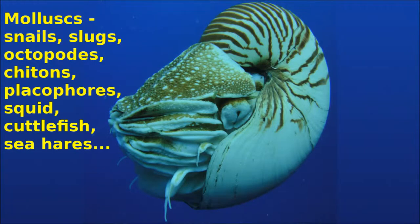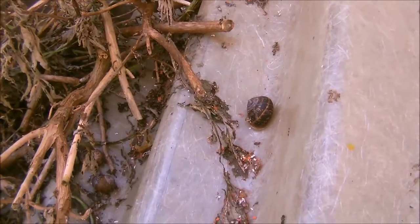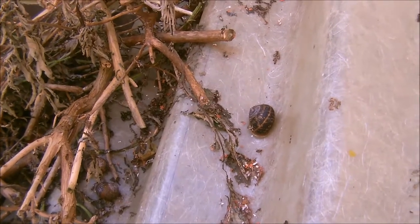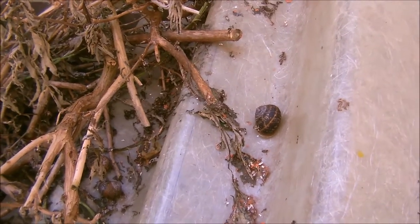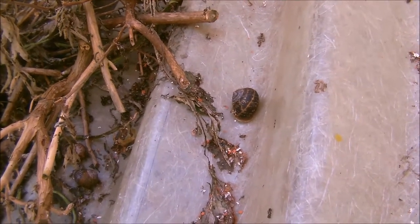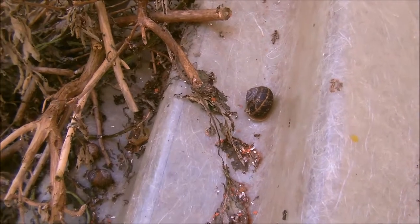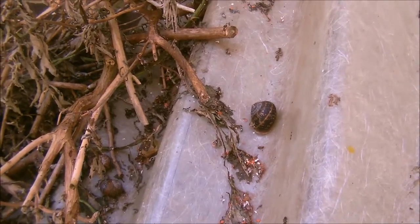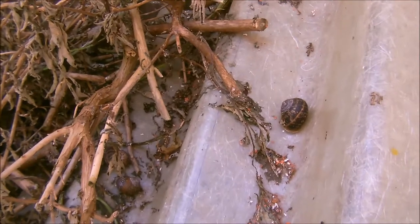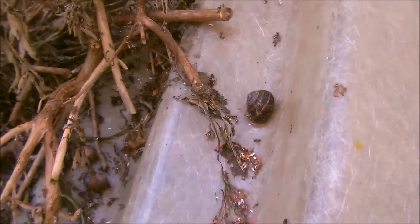The other major protostome phylum is the mollusks. Mollusks have a three-part body and tend to have external skeletons — like this snail here. They are unsegmented, and the three parts are the foot, which is the locomotory part; the head, which has the eyes and the mouth; and the visceral hump, which in this case is inside the shell. Although they are unsegmented, they're actually descended from segmented animals and are protostomes, fairly closely related to the segmented worms.